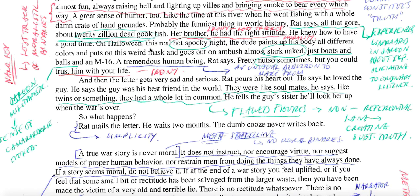'He knew how to have a good time. On Halloween, this real hot, spooky night, the dude paints up his body all different colours and puts on this weird mask and goes out on ambush, almost stark naked — just boots and balls and an M16.' This language is slang, vernacular, childish, and offensive, and it invokes a sense of masculine camaraderie created through jargon.